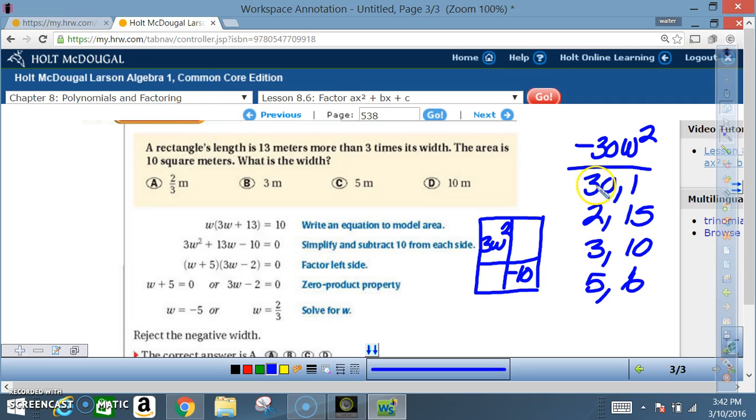about the negative yet. So 30 times 1, 2 times 15, 3 times 10, 5 times 6. Then we ask ourselves, okay, which one of these combinations if I were to add or subtract would give me a positive 13?